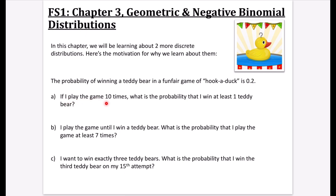The first one says: if I play the game 10 times, I want to know the probability that I win at least one teddy bear. This one feels familiar - this is a binomial distribution. We are playing the game 10 times, and the probability that you're going to win is 0.2. So we're saying X has a binomial distribution, and I'm asking what is the probability that I win at least one teddy bear.